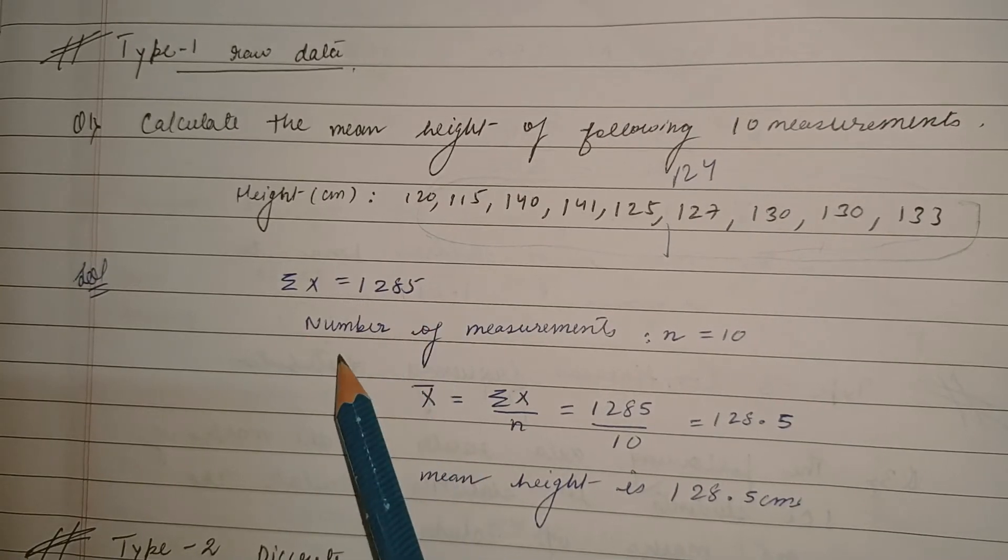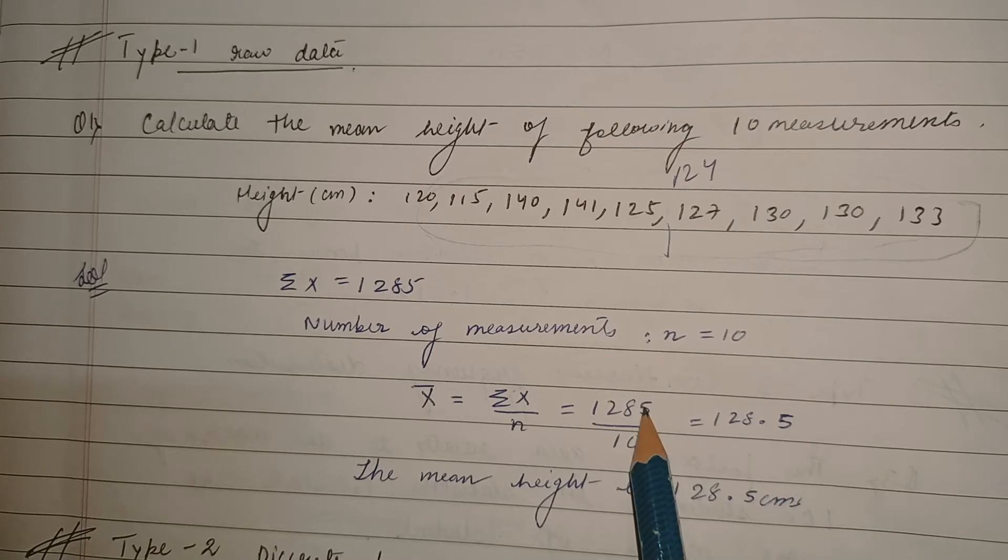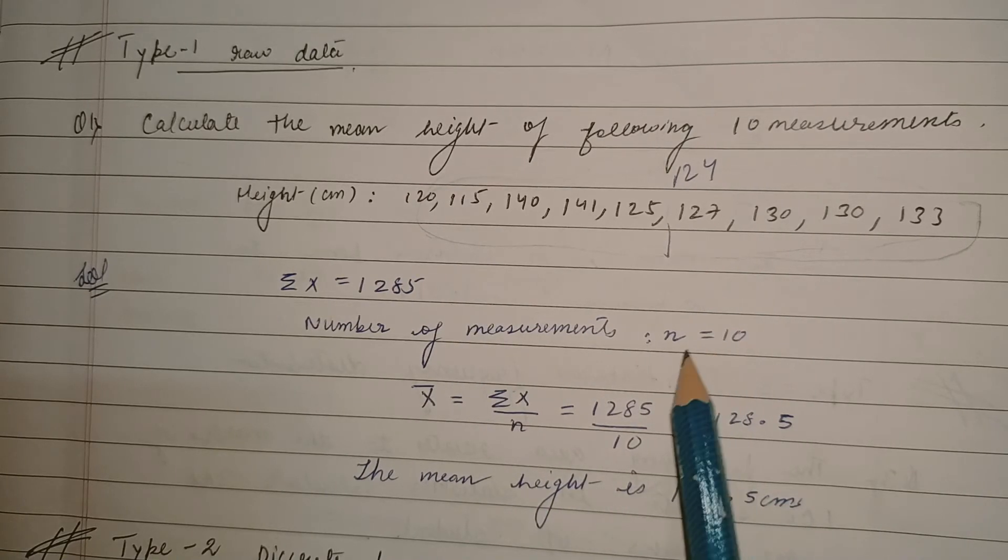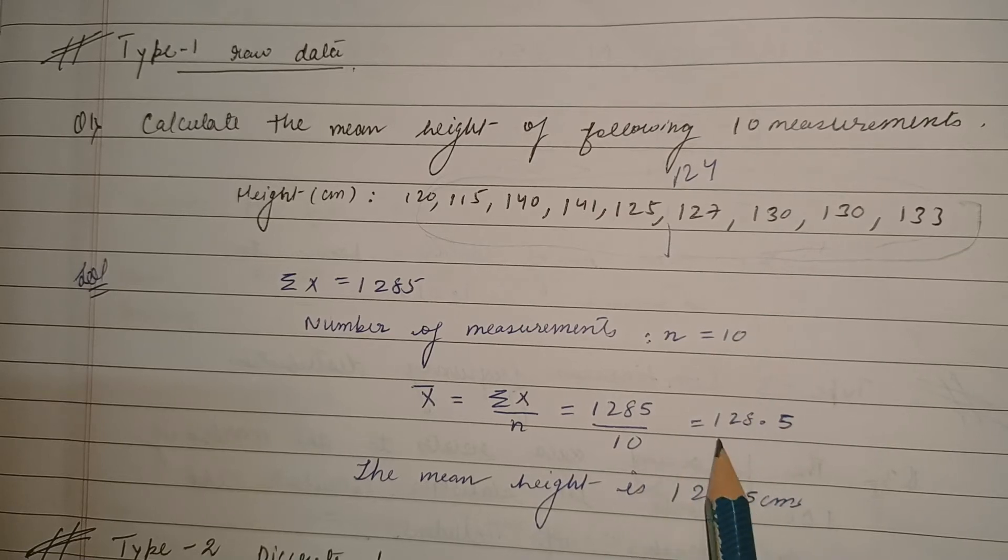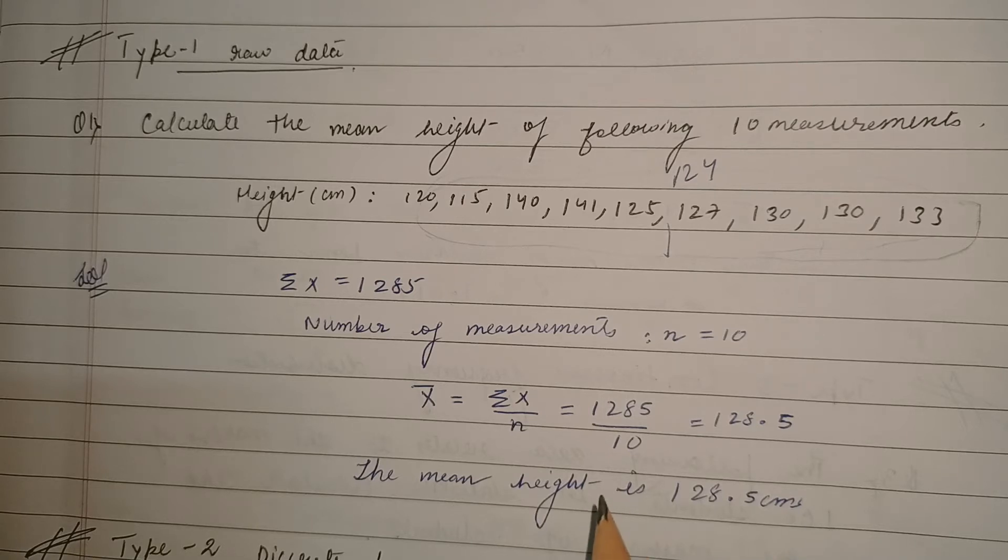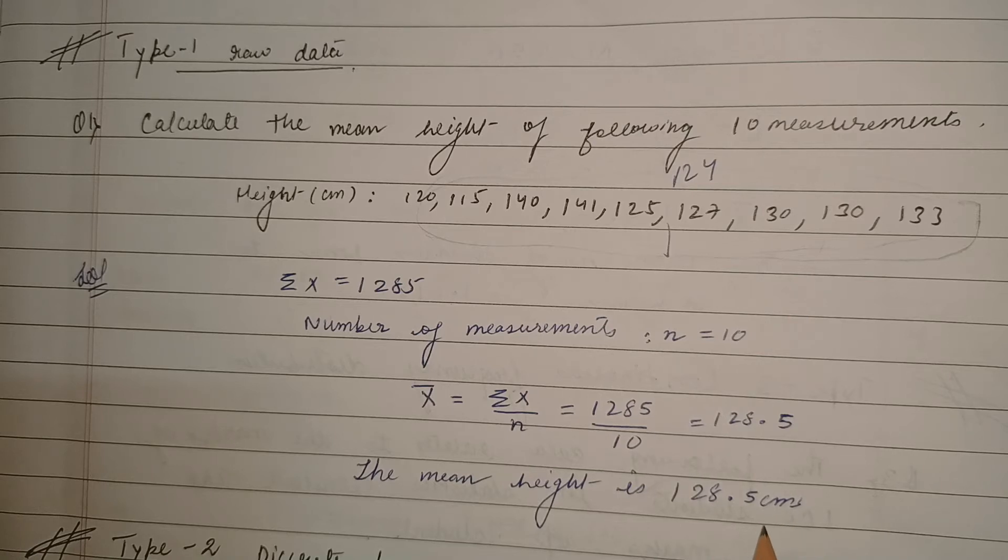So the mean is 1285, the summation of the observations, by the number of observations that is 10. That would result in 128.5. For being on the safer side always write a conclusion or inference at the last of your answer because statistics is about concluding, about proper inference. So write the statement: the mean height is 128.5 centimeters like this.